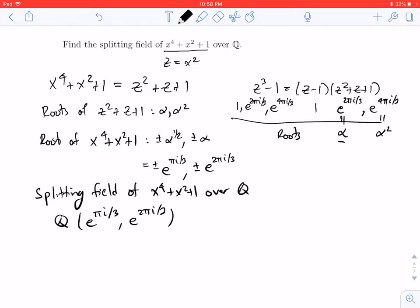Once I have e to the πi over 3, I automatically get e to the 2πi over 3 by squaring this element. So I don't need to write them both down. I can just write Q adjoin e to the πi over 3.